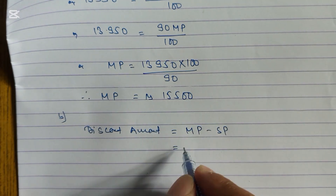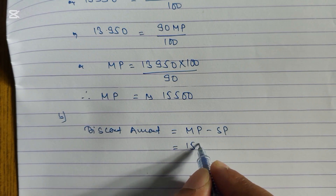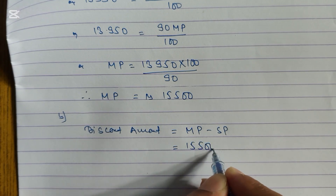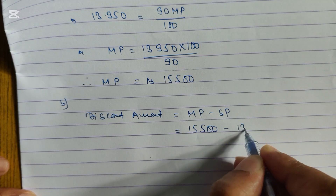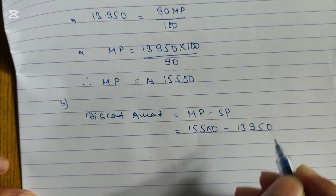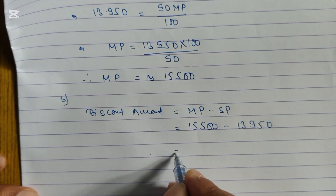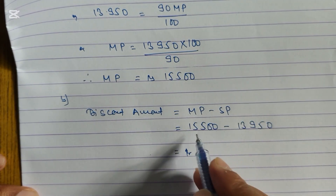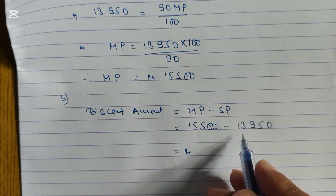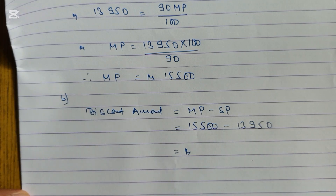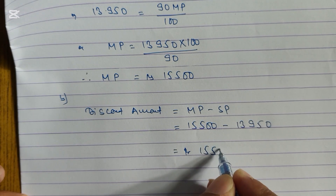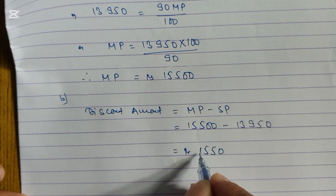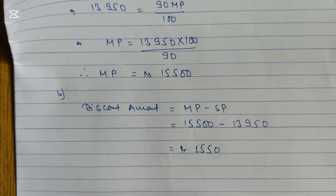MP is 15,500 minus selling price 13,950. Subtracting these, the discount amount is rupees 1,550.